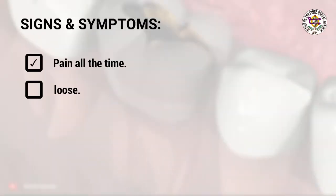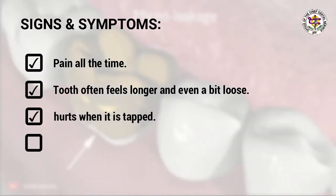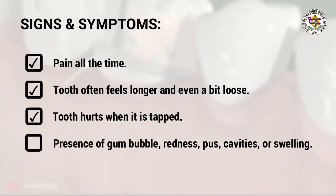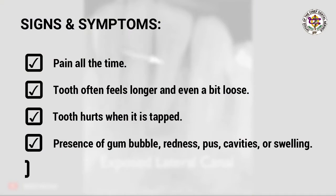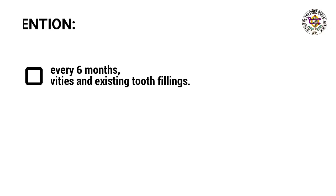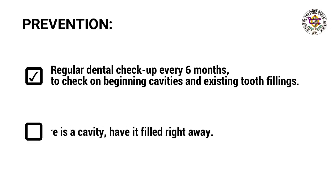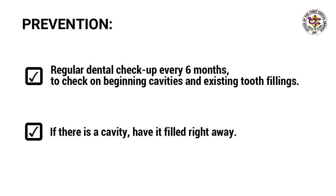Signs and symptoms: pain all the time, the tooth often feels longer and even a bit loose, and hurts when tapped. There may be a gum bubble, redness, pus, cavities, or swelling. It appears as a dark circular lesion on X-ray.